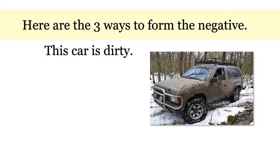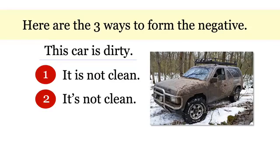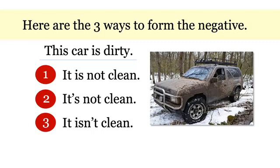Here are the three ways to form the negative of Be again. This car is dirty. The first way: just add the word 'not' — 'it is not clean.' The second way: make a contraction with 'it' and 'is' — 'it's not clean.' The third way: make a contraction with 'is' and 'not' — 'it isn't clean.' Notice, we still have 'is' and 'not' in every sentence.